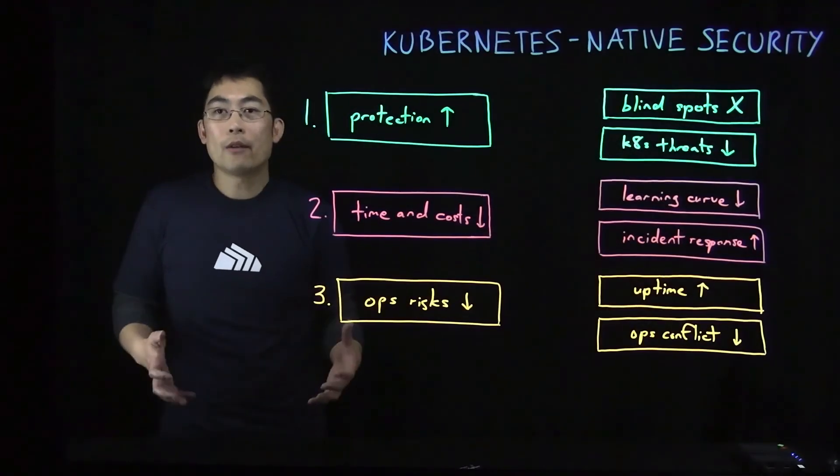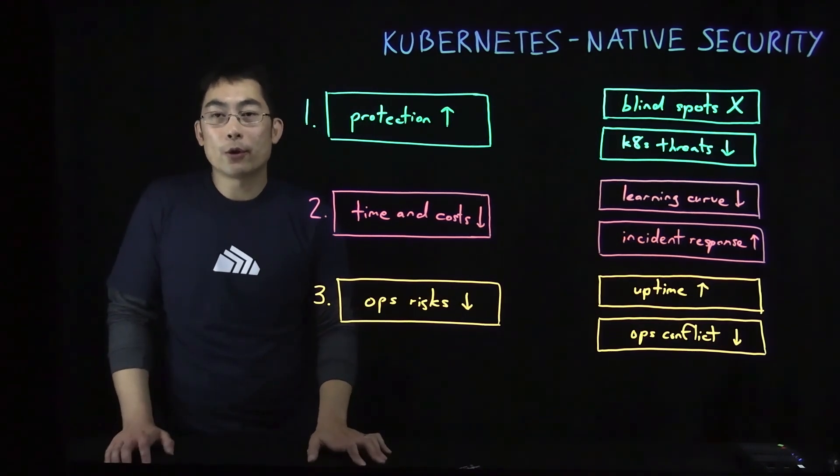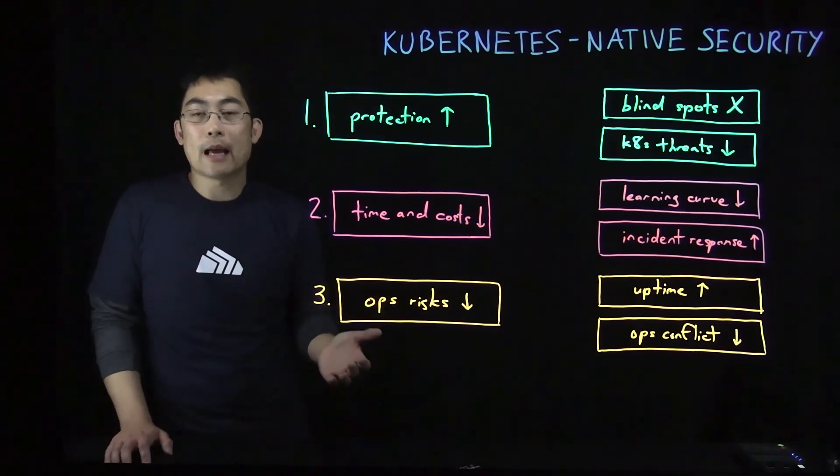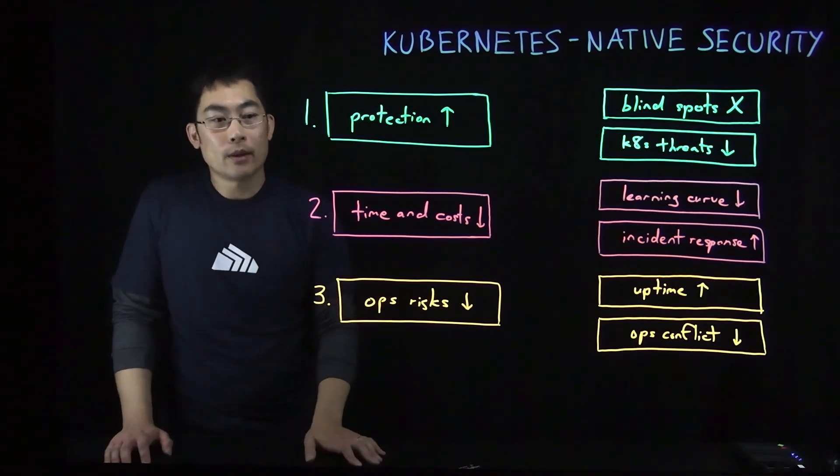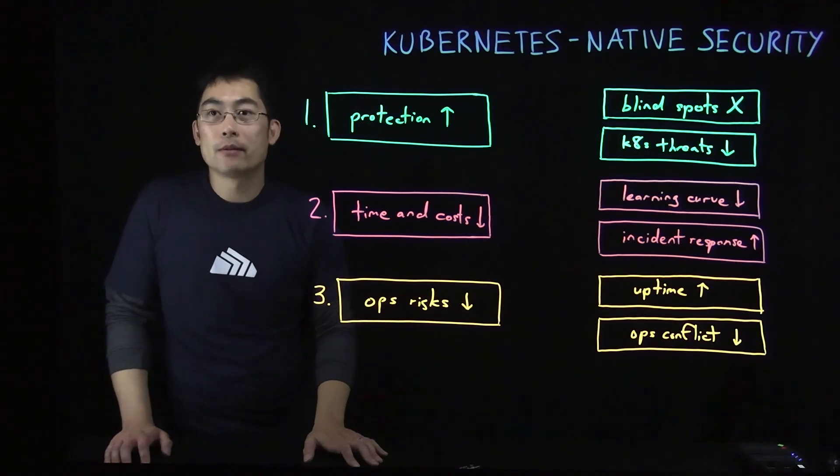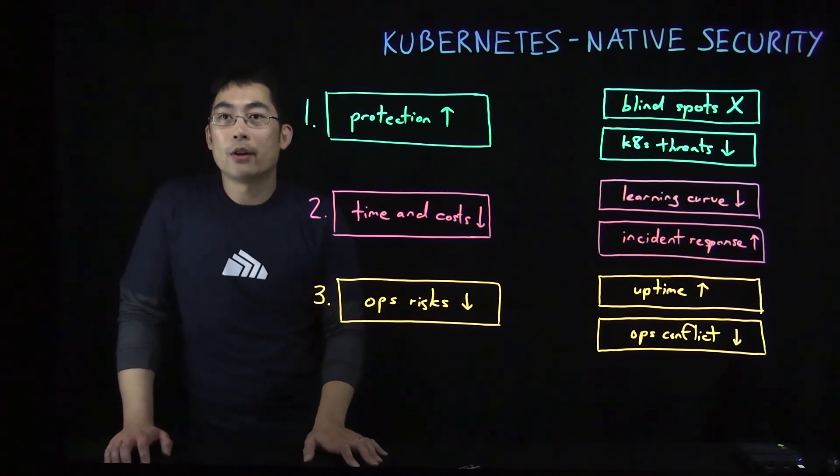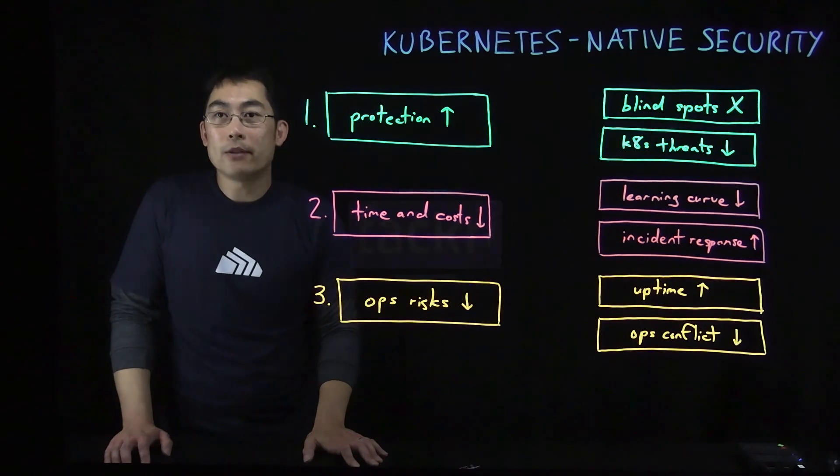We've now covered the six key criteria that make a security solution Kubernetes native and the three key benefits that a Kubernetes native security approach can enable. With this approach, you can realize significant benefits to protecting your containerized applications. To learn more about Kubernetes security and StackRox platform, please visit www.stackrox.com.